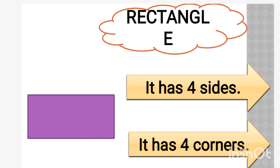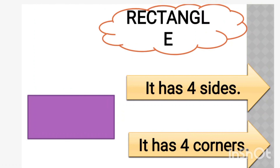The first point is rectangle has four sides, just like square. Rectangle के पास भी four sides होती है। Let's count them: one, two, three, four.